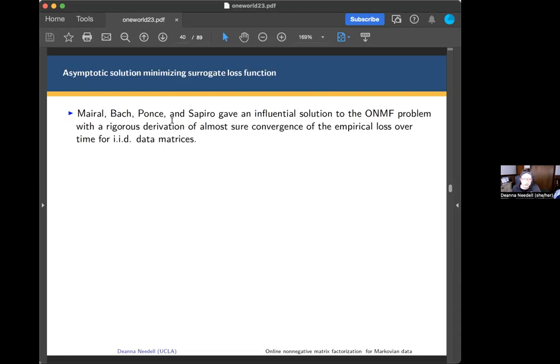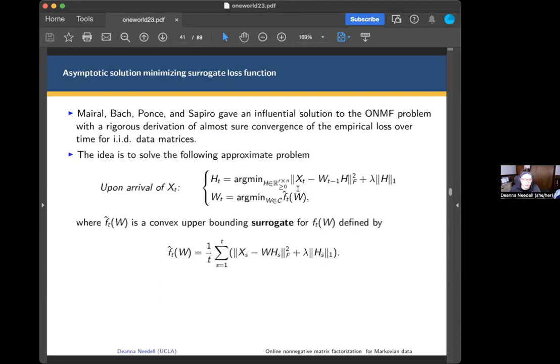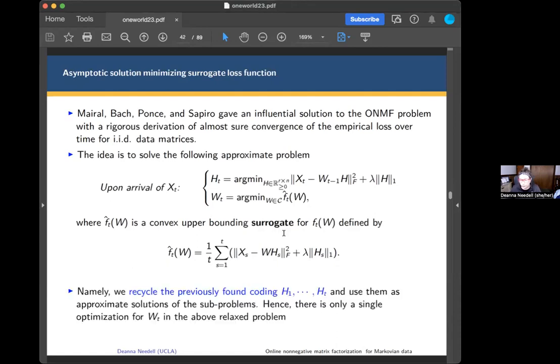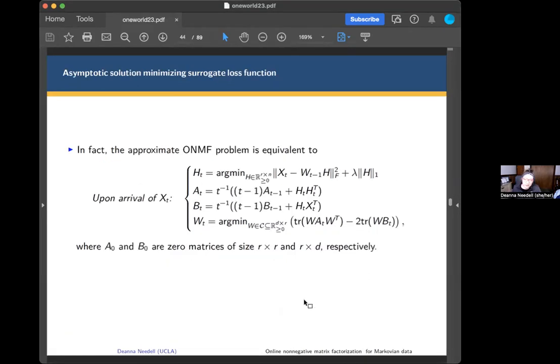This group of people actually gave an algorithm to do this, and they also proved almost sure convergence in the case of IID data. Here we're going to replace the empirical loss with a surrogate that helps us get around the need to store the history. We're recycling the previously found coding matrices and using them as approximate solutions to the sub problem. So there's only a single optimization for W instead of many. In addition, you can even get around having to store the history by aggregating the data.